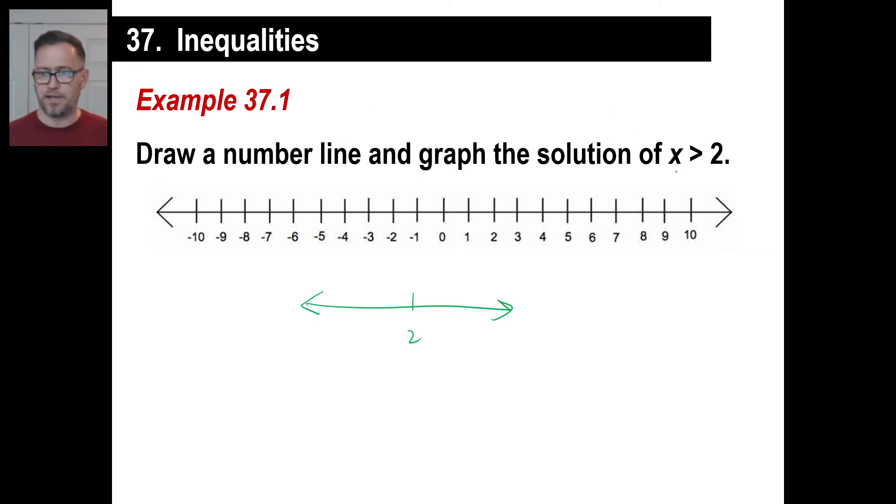Graph the solution of x is greater than two, okay? This is what you want to do. You know that it's going to include everything on this number line to the right of two, okay? And it's not going to include two, so what we do is we put a little circle that's not a closed end to indicate we don't include two. Then we just go like this, everything to the right, simple as you can do it, right?